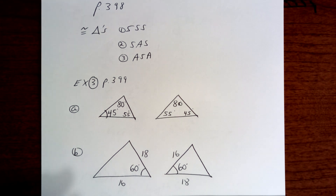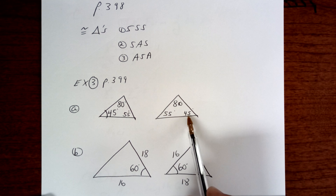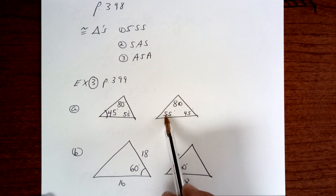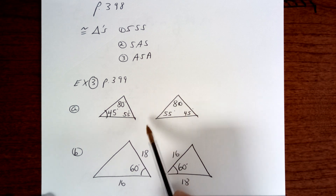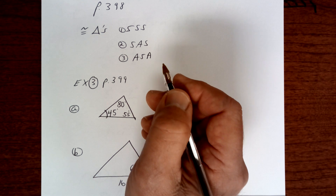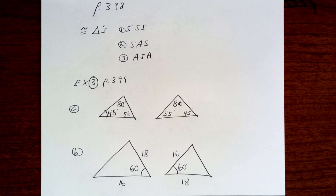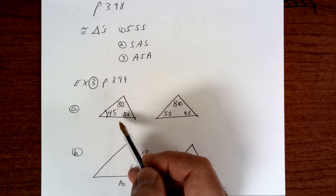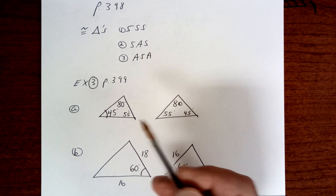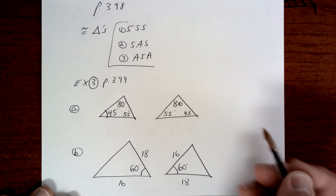That means the sides are the same and the angles are the same. So look up here: this one has 45, this one has 45, this one has 80, this one has 80, and this one has 55. So now this one right here, you have all the angles equal. Just because you have the three angles on both triangles, does that make them congruent? There is no three-angles theorem, so we're going to say not congruent.